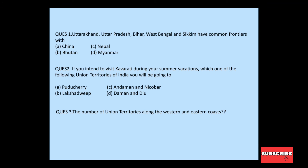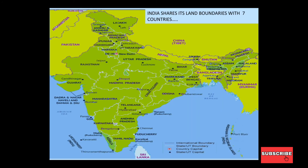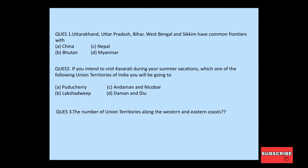Have you seen all these things? The chapter is finished. Let's see some questions — there are three. First question: Uttarakhand, Uttar Pradesh, Bihar, West Bengal, and Sikkim have common frontiers with which country? These 5 states share a common border. Myanmar is on the east side, so UP can't touch it. China — Uttarakhand touches China but UP does not. Bhutan does not share a border with these five. The correct answer is Nepal.